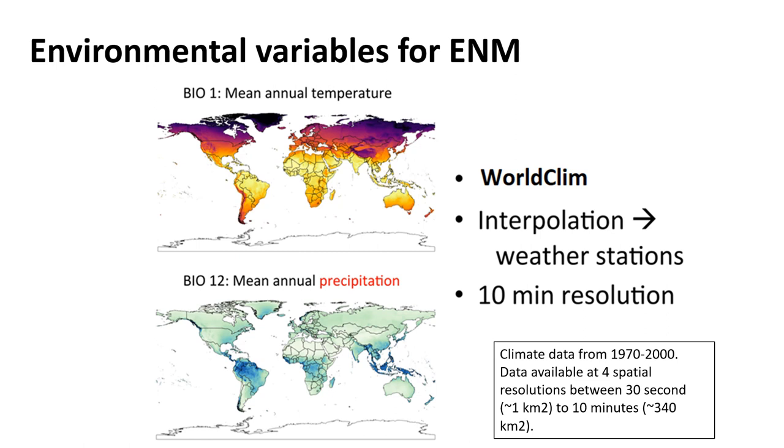Here is the example for WorldClim. So this data came from weather stations. The data is from 1970 to 2000, and it's available with four spatial resolutions between 30 seconds to 10 minutes arc. And in this example, the data is under 10 minutes resolution.